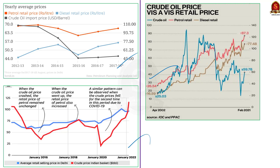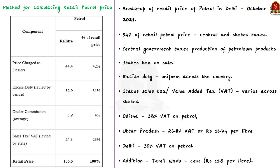Looking at the graphs, you can clearly see that the retail prices of petrol and diesel seem to be increasing even when the crude oil price is decreasing. There is a wide gap between the retail prices of petrol and the crude oil price. To understand the reasons behind this rise, you must understand how the retail price of petrol is calculated. Around 54% of the retail price of petrol comprises central and state taxes.